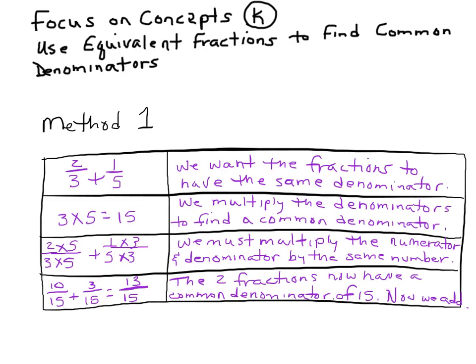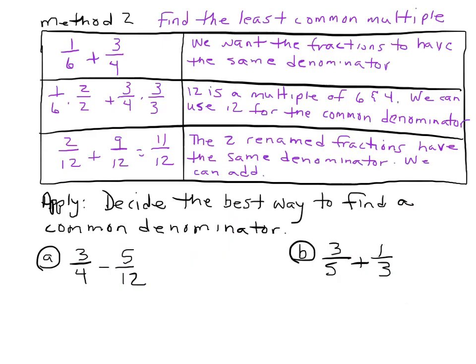This is a tricky one — not hard, just tricky. But there's also another way. You want to find the least common multiple. Sometimes you have to use a high multiple, but as you start getting into this more, you'll see that you want to try to use the least common multiple — the smallest multiple they have in common.